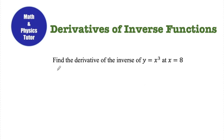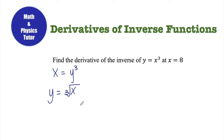I can start a problem like this by solving for the inverse of y. To solve for the inverse of a function, I switch x and y, so this would become x equals y cubed. Then I solve for y, and I get y equals the cubed root of x. This is now my inverse function, so I give it an exponent of negative 1: y inverse equals the cube root of x.